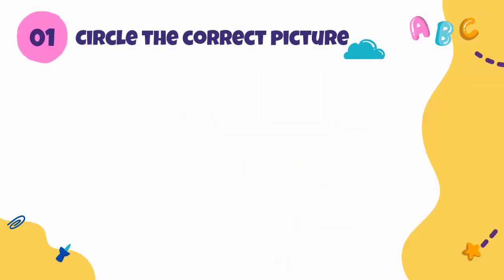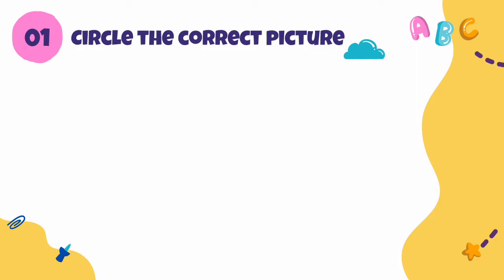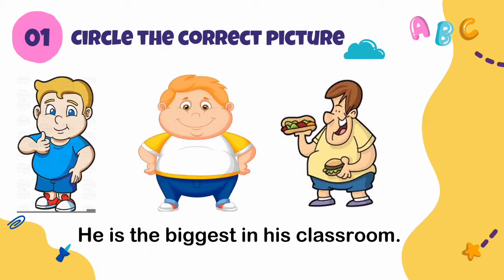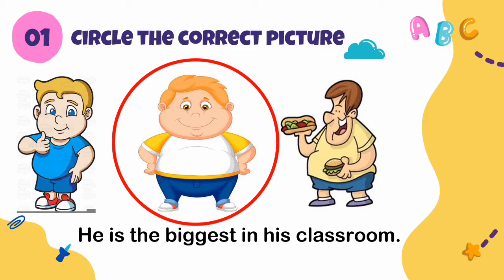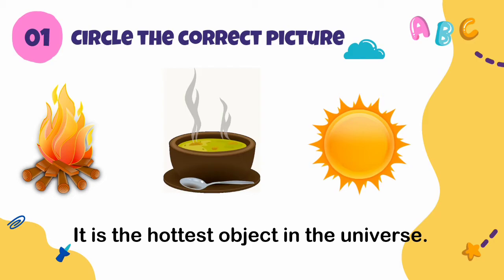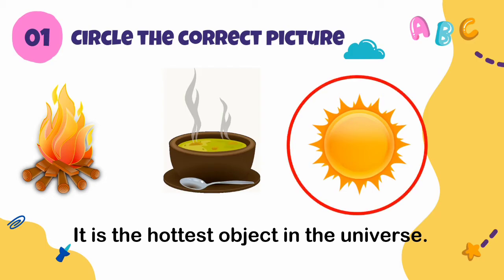Exercise number one: Circle the correct picture — lingkarilah gambar yang tepat. There are three pictures, you have to circle one picture based on the sentence. He is the biggest in his classroom — which one is the biggest? Yes, he is the biggest in his classroom. It is the hottest object in the universe — which one is the hottest? Good job! This is the hottest — it's the sun.